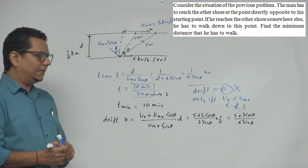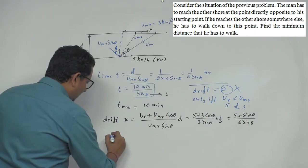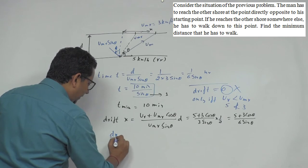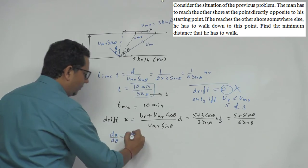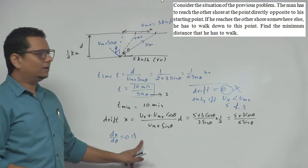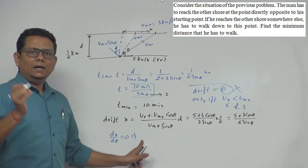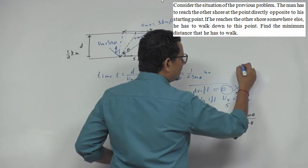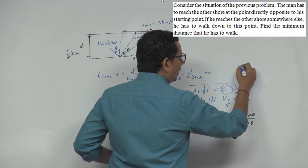Now for the minimum value, we will differentiate. So we will say dx by d theta equals 0, which implies when we differentiate this, again here we use the quotient rule.